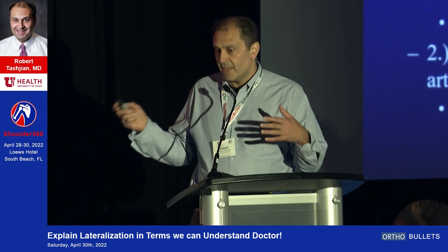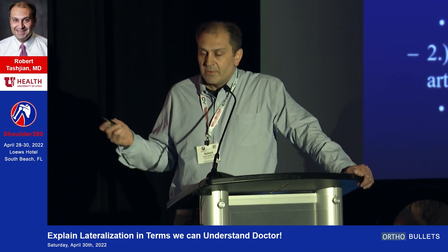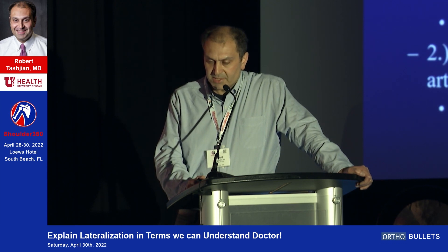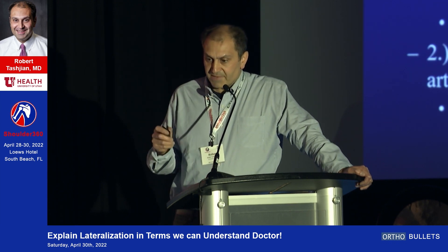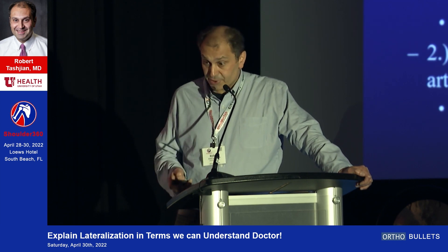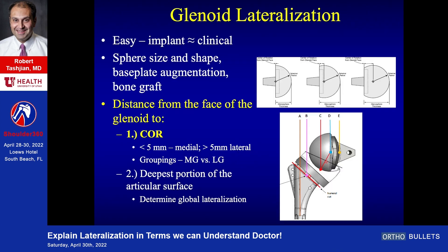Looking at the glenoid side: glenoid implant lateralization has various effects, including increasing sphere size, base plate augmentation, and bone grafting. There are two ways to measure it — the distance from the face of the glenoid to the center of rotation of the glenosphere, or the distance from the face of the glenoid to the deepest portion of the articular surface. My preference is to use the former, grouping implants into medial or lateralized glenoids based upon five millimeters.